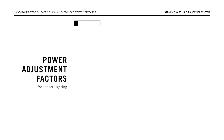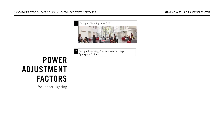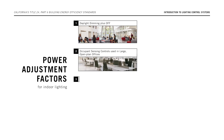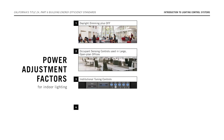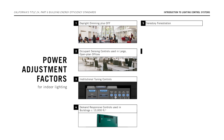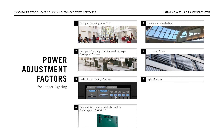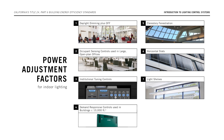Power adjustment factors are available for seven specific control measures which go beyond the Energy Code's mandatory measures. They include daylight dimming plus off, occupant sensing controls used in large open plan offices, institutional tuning controls, demand responsive controls used in buildings 10,000 square feet or less, clear story fenestration, horizontal slats, and light shelves. You can find more information on these control strategies in section 140.6 of the Energy Code.